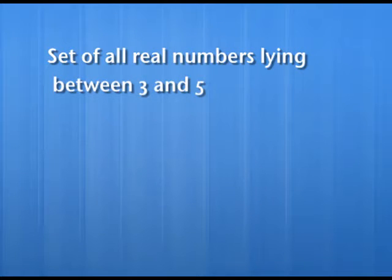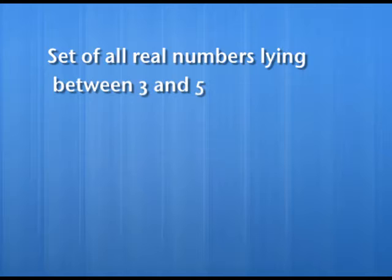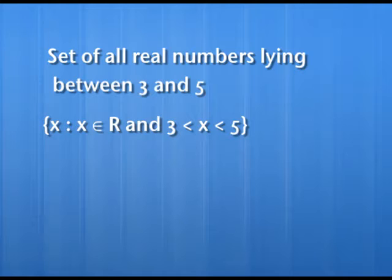The set builder form is mainly very useful when we are unable to list all elements in roster form. Suppose I want to write the set of all real numbers lying between 3 and 5. It is not possible to write all the real numbers between 3 and 5 separated by commas. In that case, we use the property: set of all x such that x is a real number, x is greater than 3 and less than 5. This set will be the set of all real numbers between 3 and 5, with 3 and 5 not included.